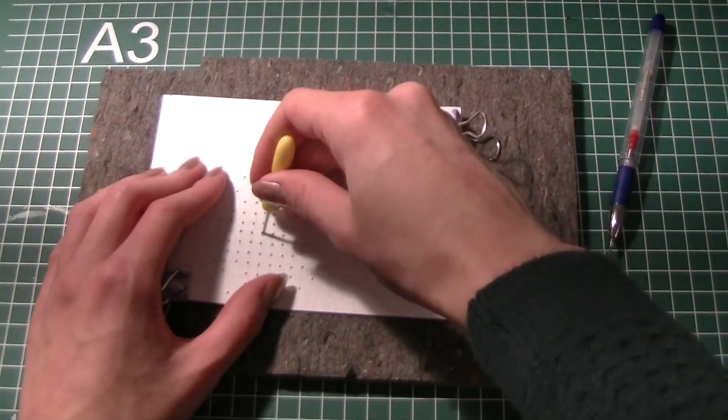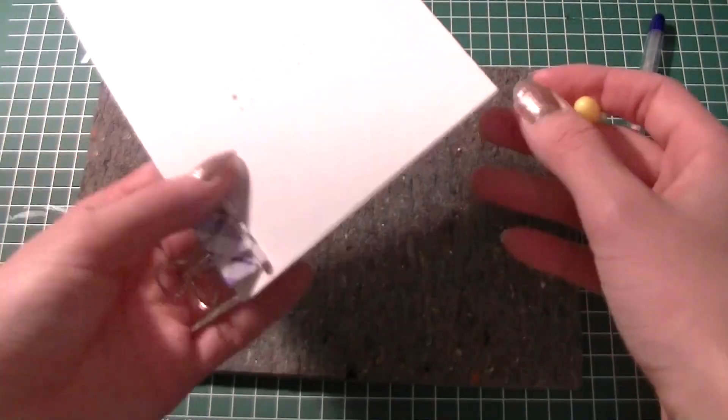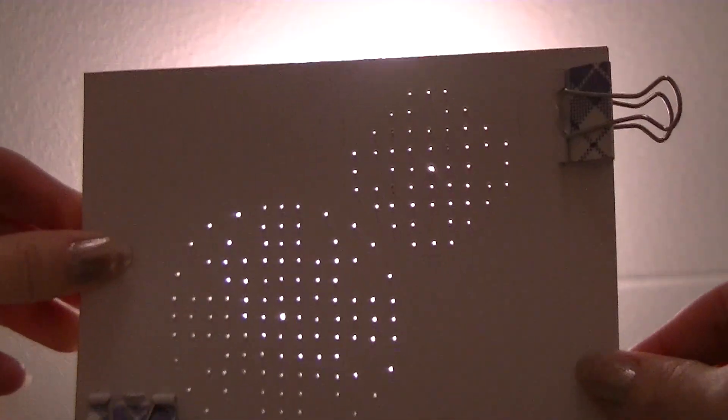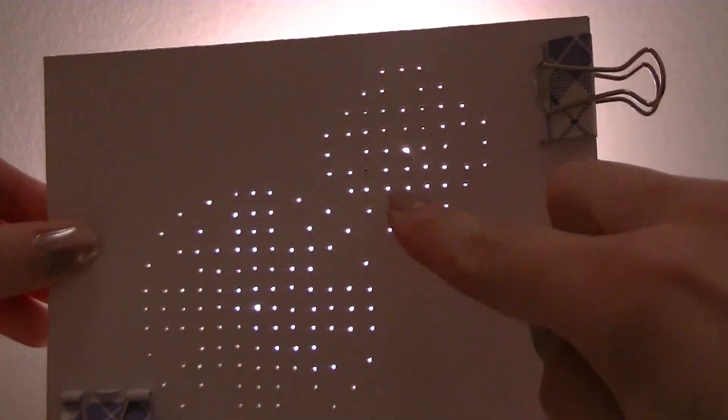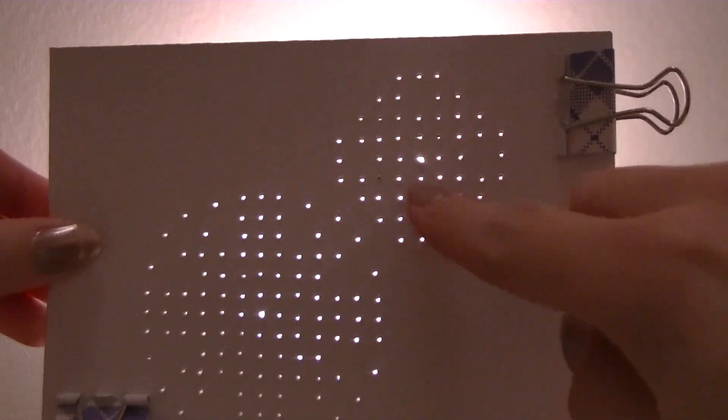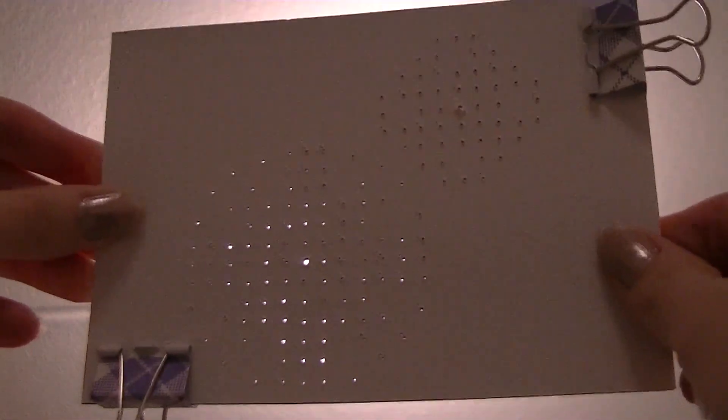You can check whether you've got all the holes easily by holding the card with template in front of some source of light. Here you can see I missed one.